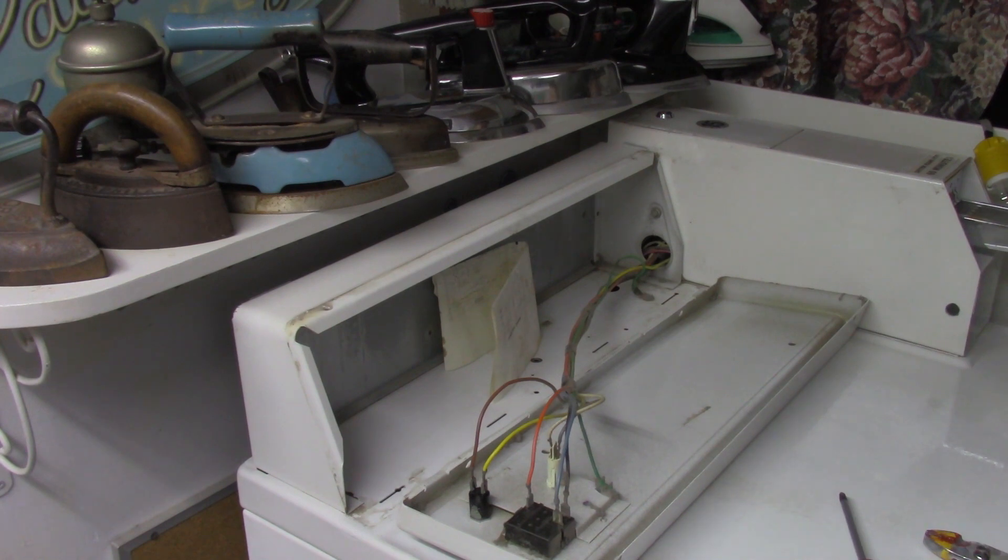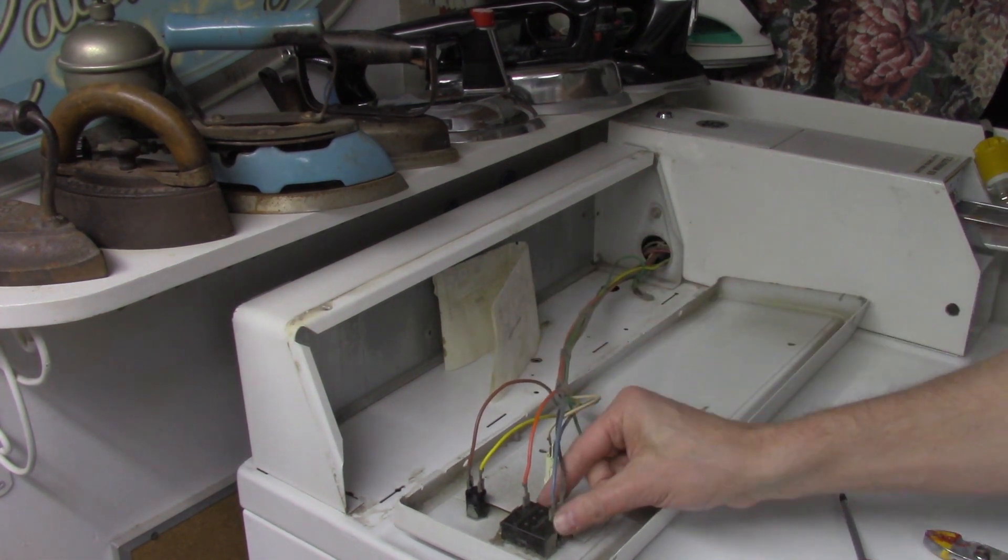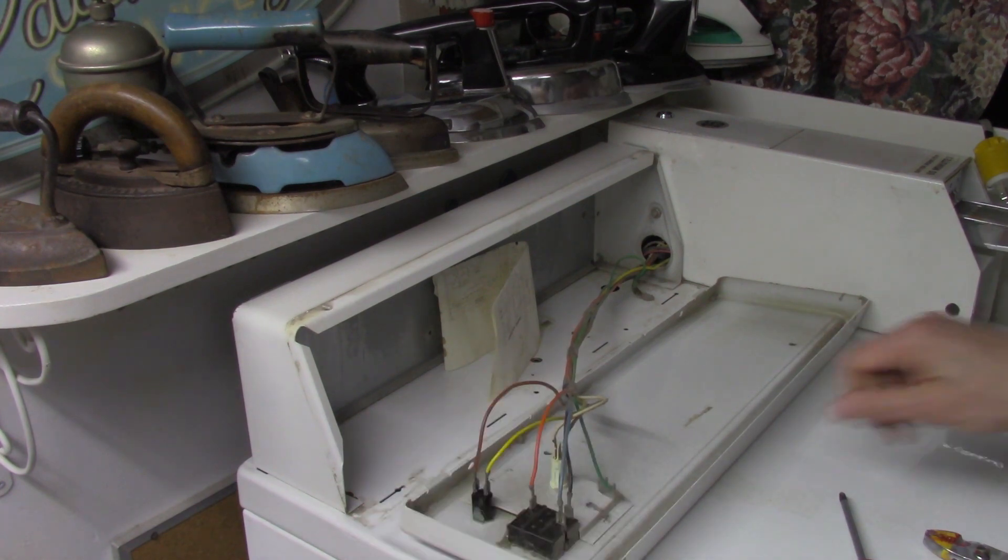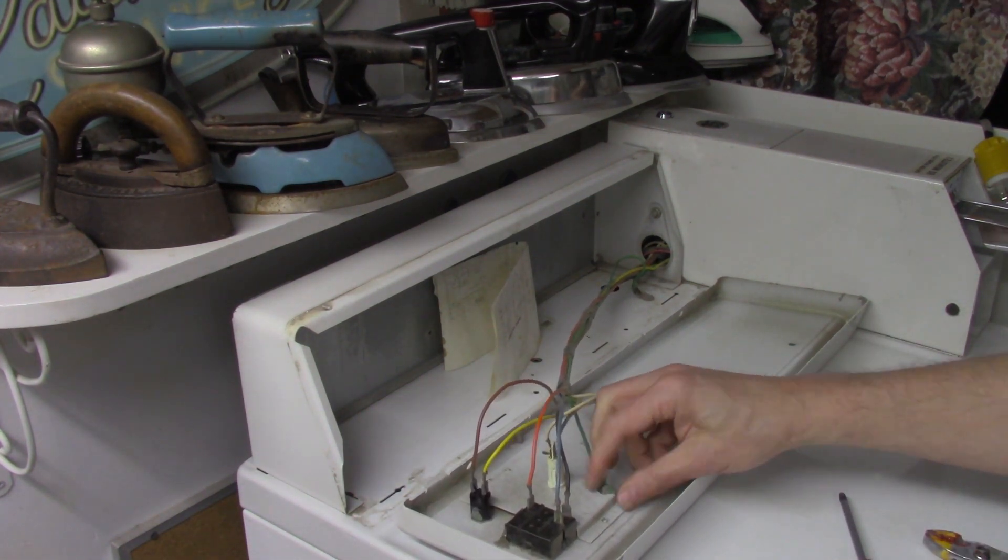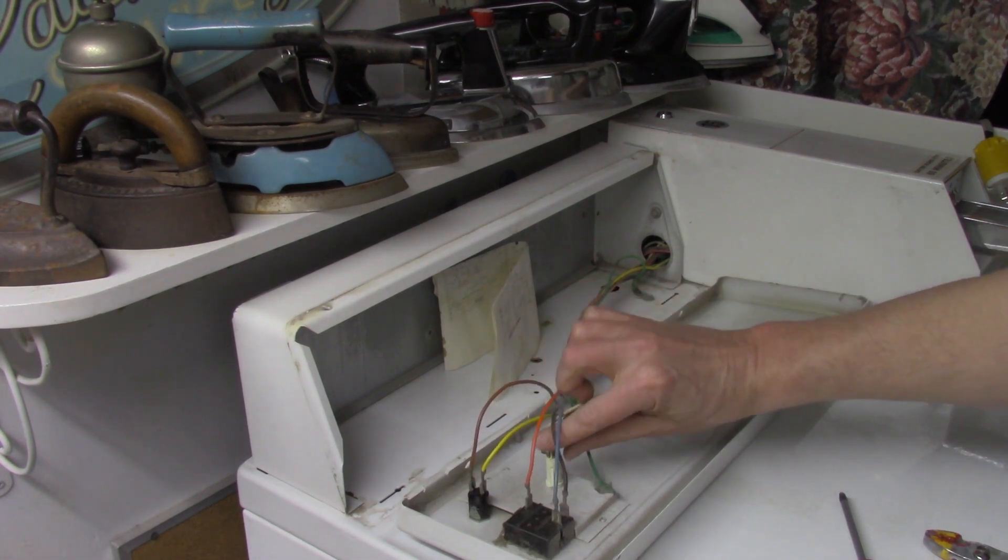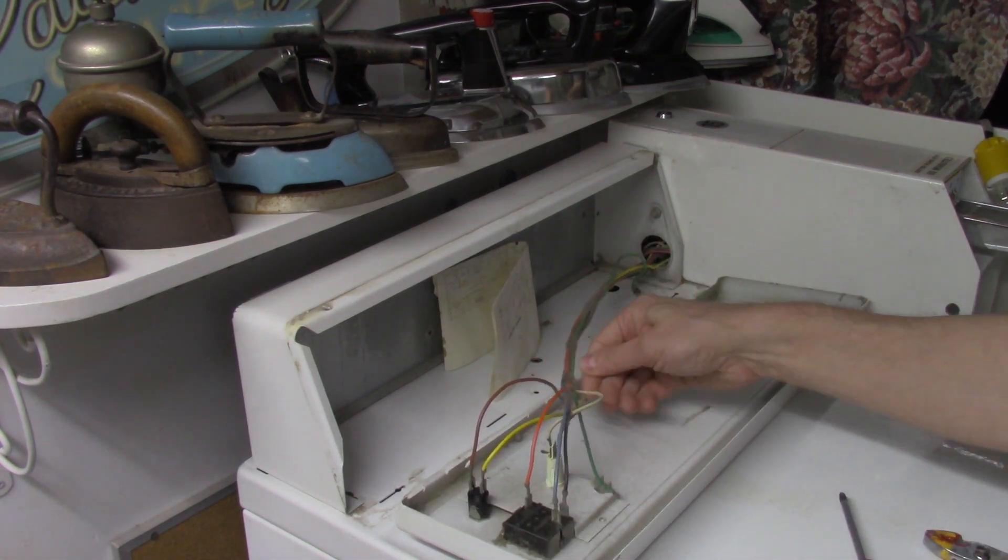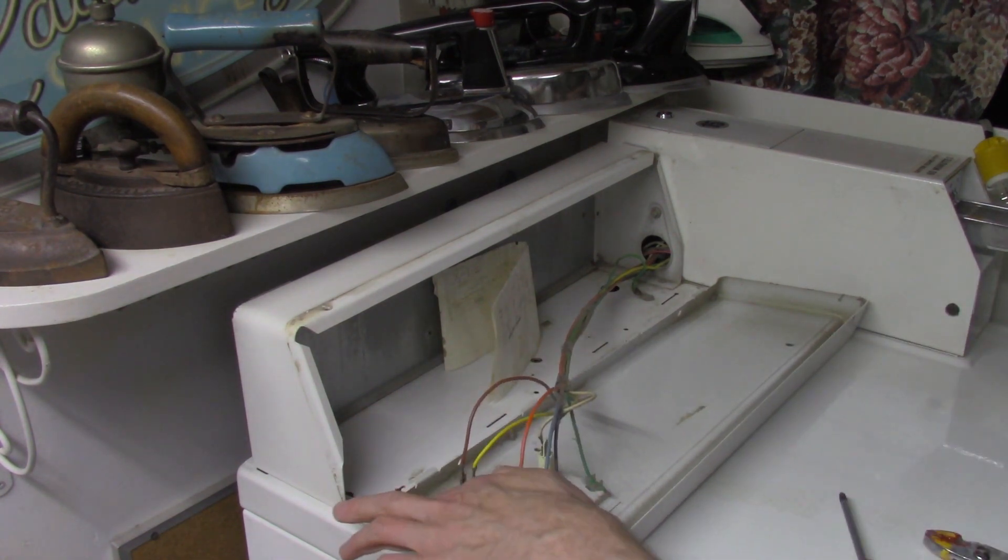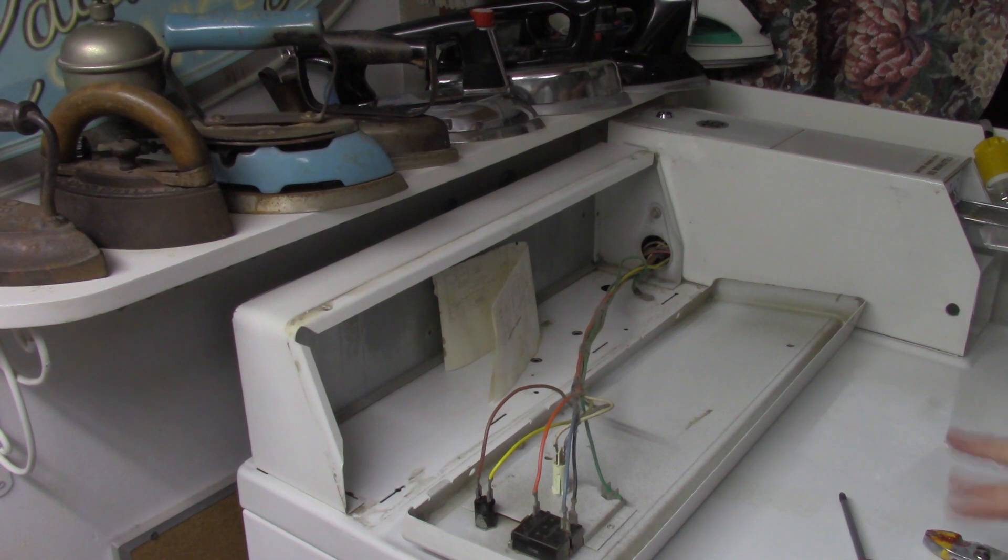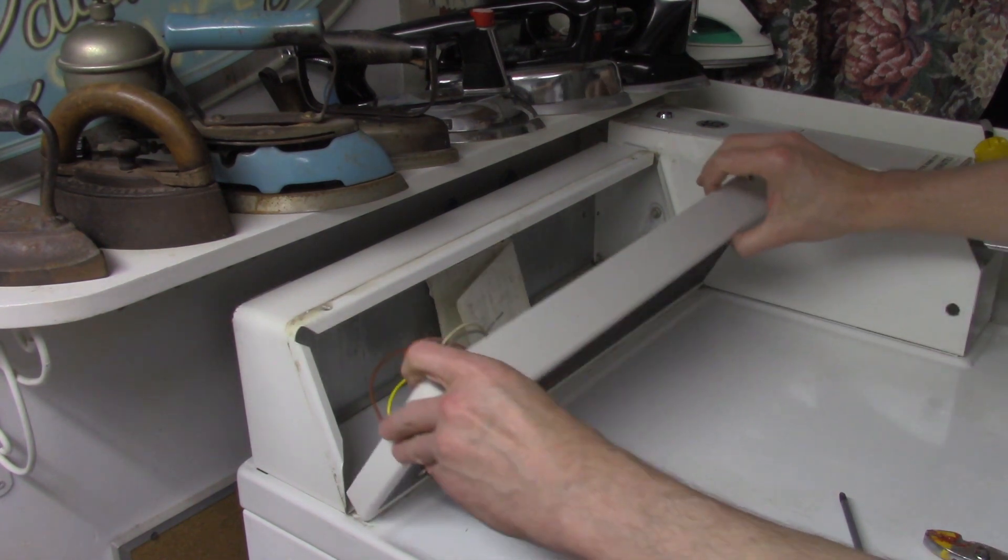While you have the dryer open, look for and clean out any dust that might be in there. Check the other electrical connections to make sure everything looks okay. Check the ground connection to make sure it gets good ground. You don't want someone being electrocuted on the dryer. Make sure everything is clean inside and put it back together.